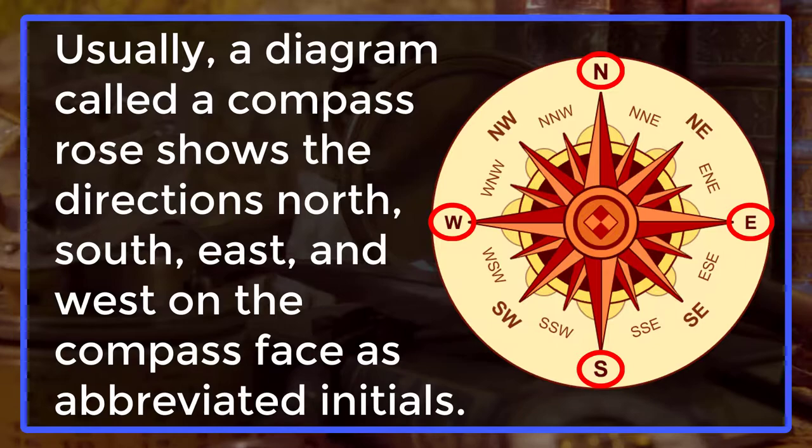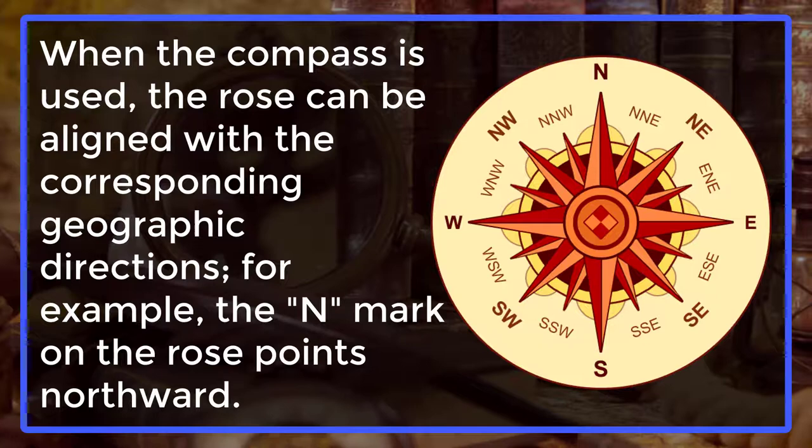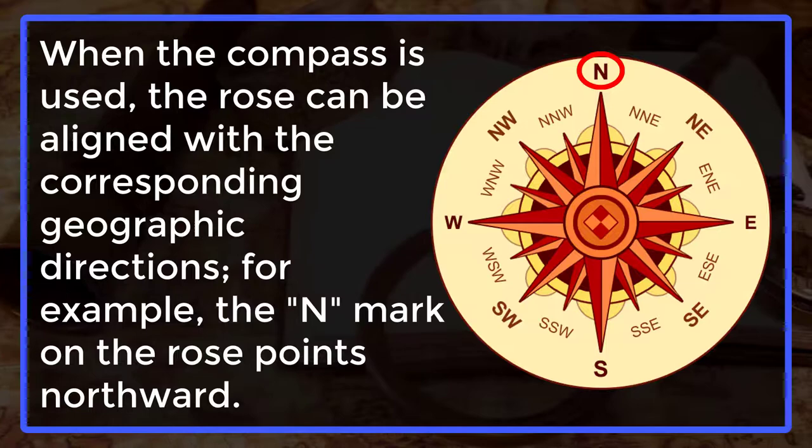When the compass is used, the rose can be aligned with the corresponding geographic directions. For example, the N mark on the rose points northward.